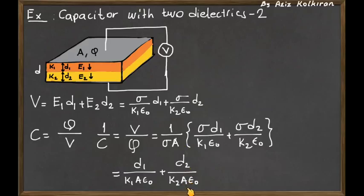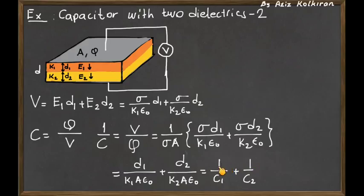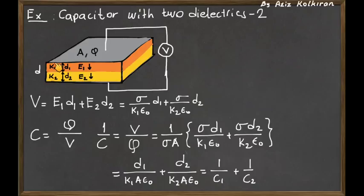In the second term, C2 is a parallel plate capacitor with thickness d2 and dielectric material k2 between the plates. So the total equivalent capacitance is expressed as the sum of these two inverse capacitances. You will recognize that this is nothing but the total equivalent capacitance of two capacitors connected in series. This configuration acts as if we have two different capacitors with two different thicknesses and two different dielectric materials connected in series. This is our end result.